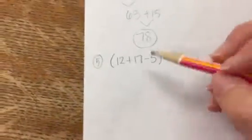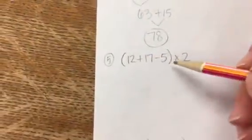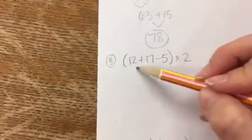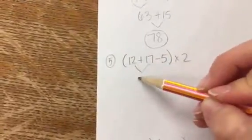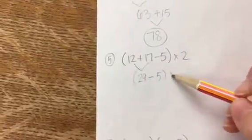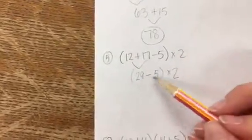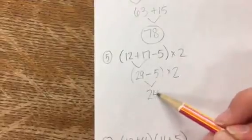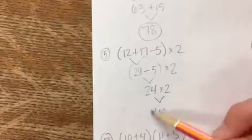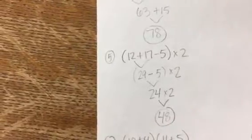This time we have 3 values in the parentheses, but it doesn't change the fact that we have to solve what's inside the parentheses first before we get to any multiplication. 12 plus 17 is 29. Bring down the minus 5 and the times 2. 29 minus 5 is 24. Bring down the times 2. 24 times 2 is 48. That's the answer to number 5.